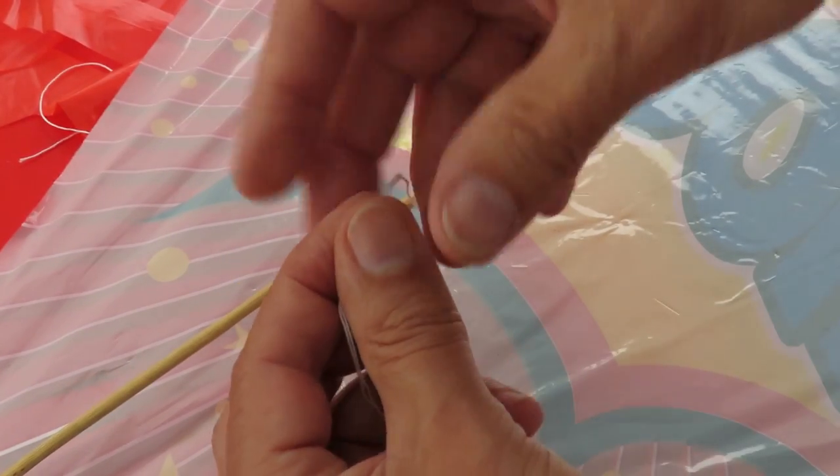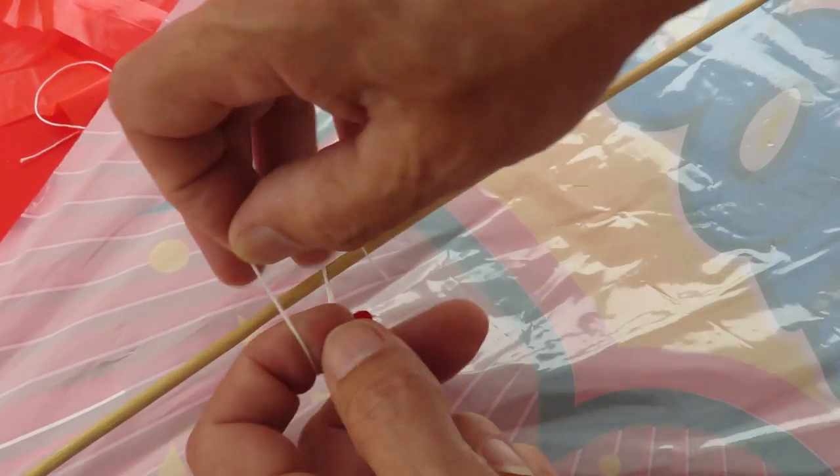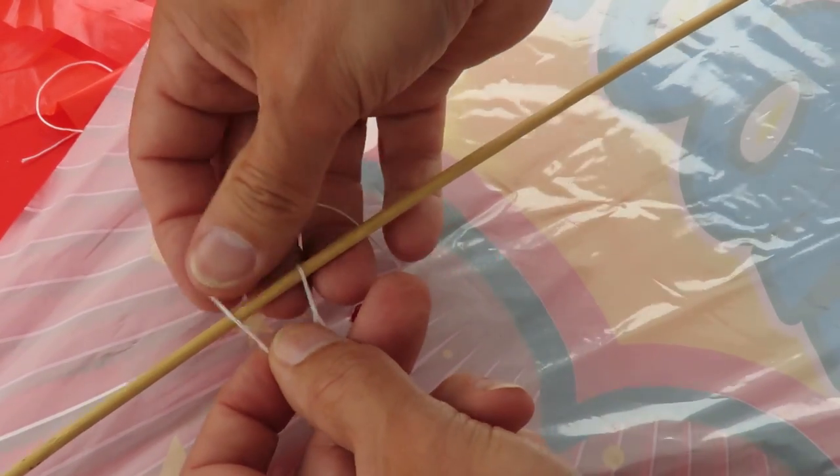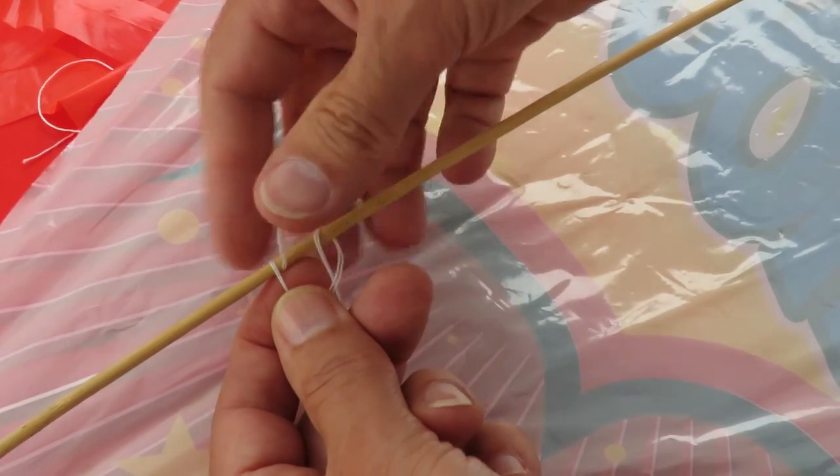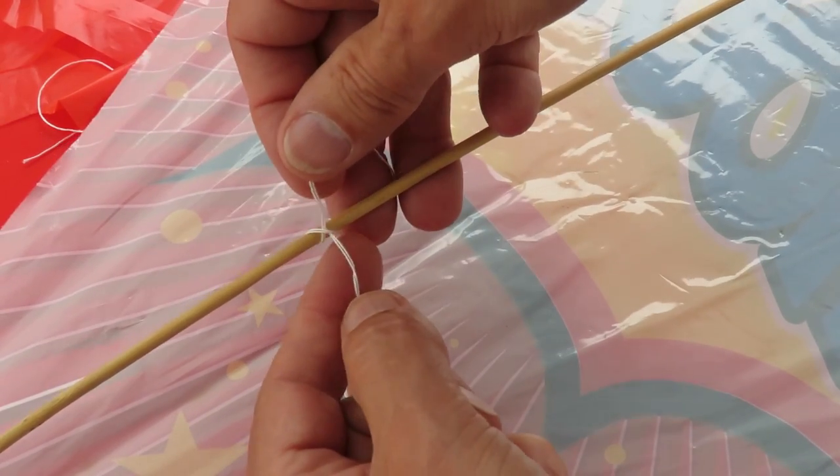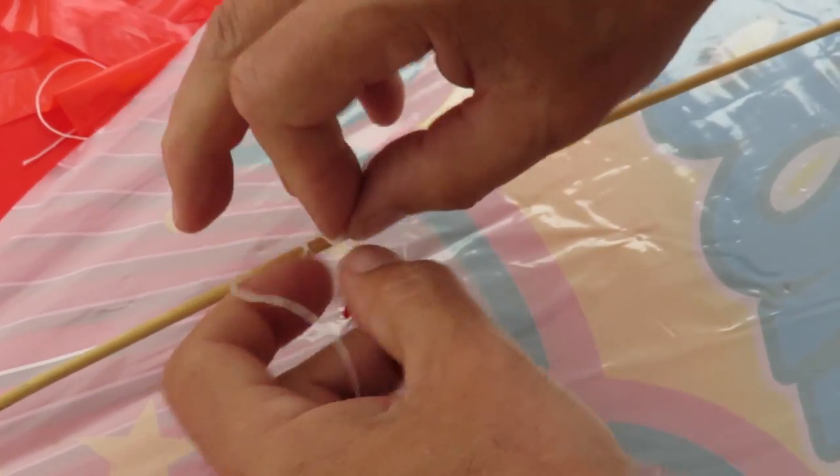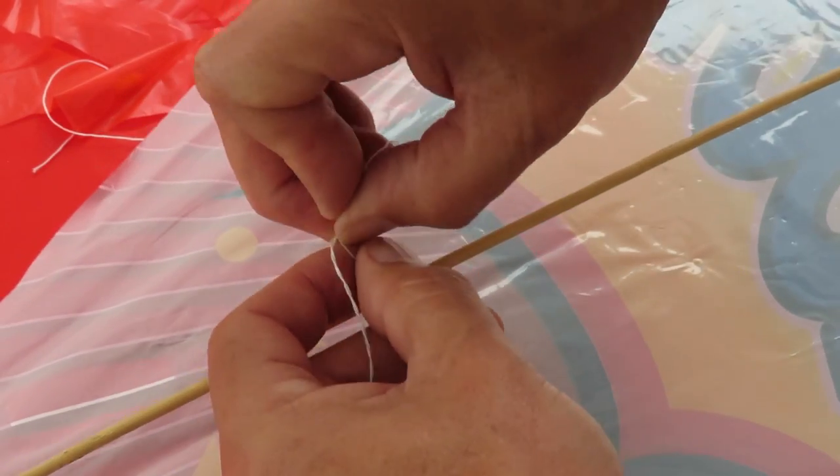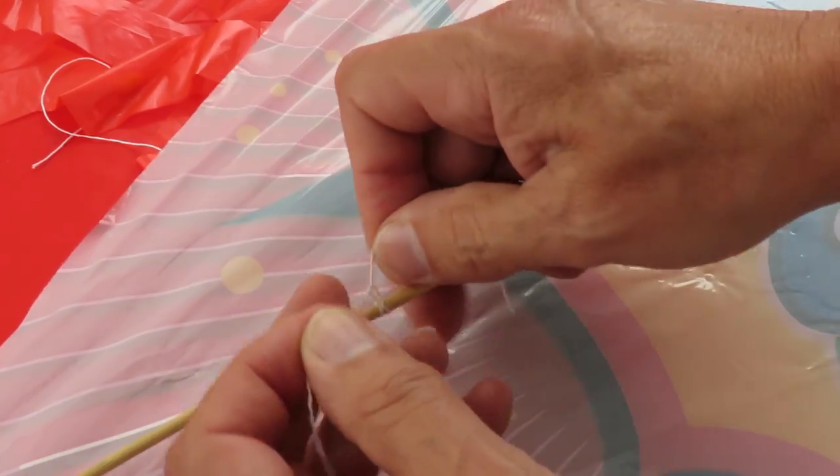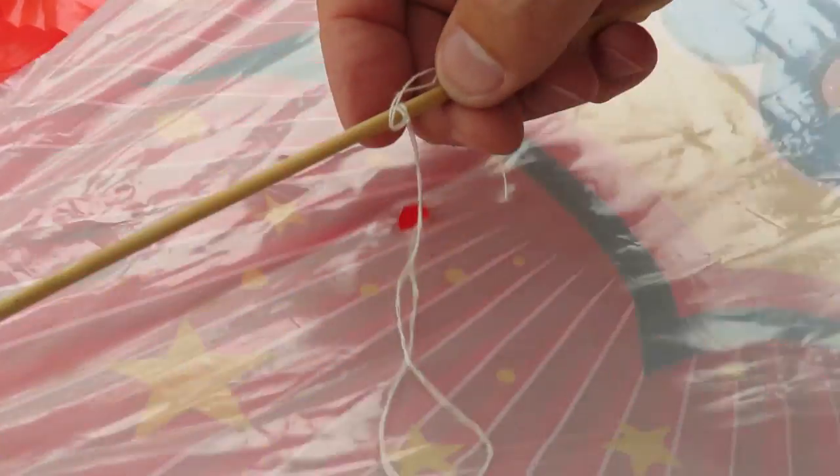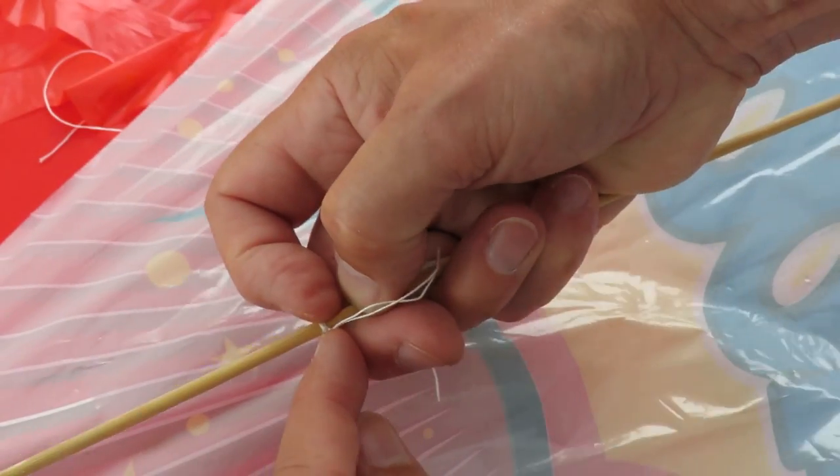Right, the knot I use: over, round, hold it so we can cross it over, go round again, and bring it through the gap. So when we pull it tight we've got that cross. And just to hold it, I'll give it an extra hitch. Just move that along so it lines up with the hole.